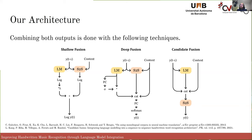Finally, candidate fusion works differently in the sense that the language model anticipates itself to the sequence-to-sequence model. The language model outputs a distribution of tokens it expects to be most likely at each time step, and then the sequence-to-sequence model learns to leverage this information to produce the correct output.